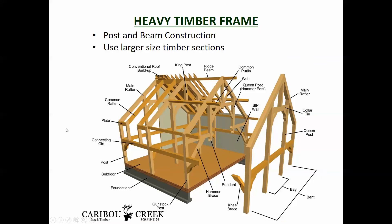The other type of timber frame is a heavy timber frame. They use post and beam construction with larger size timber sections — so 6 by 6 (150 by 150), 6 by 8 (150 by 200mm) — big bits of timber. With the light frame timber house there are a whole lot of studs in between, but with heavy timber the columns would be 3 to 5 metres apart from each other. In a way, the structure is a lot like a steel structure, like a portal frame.